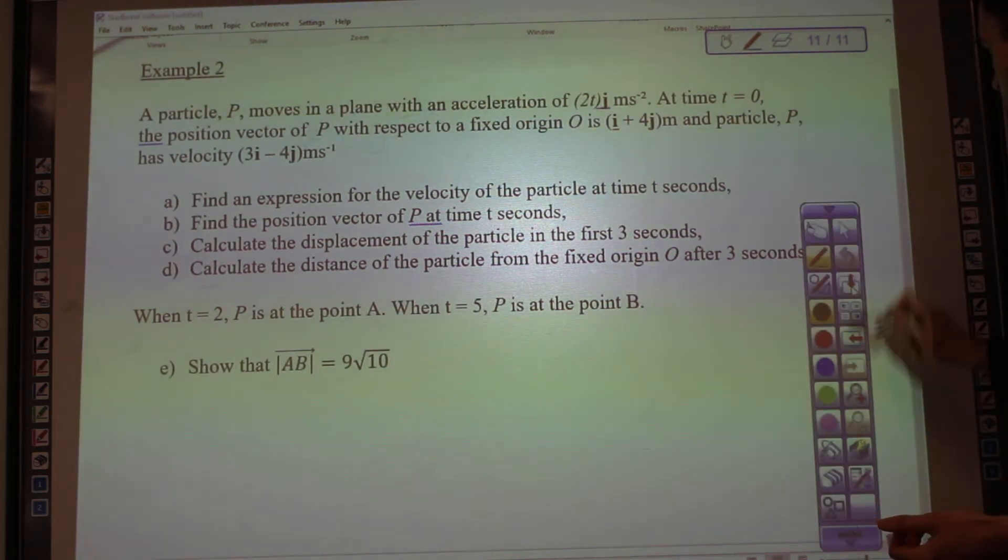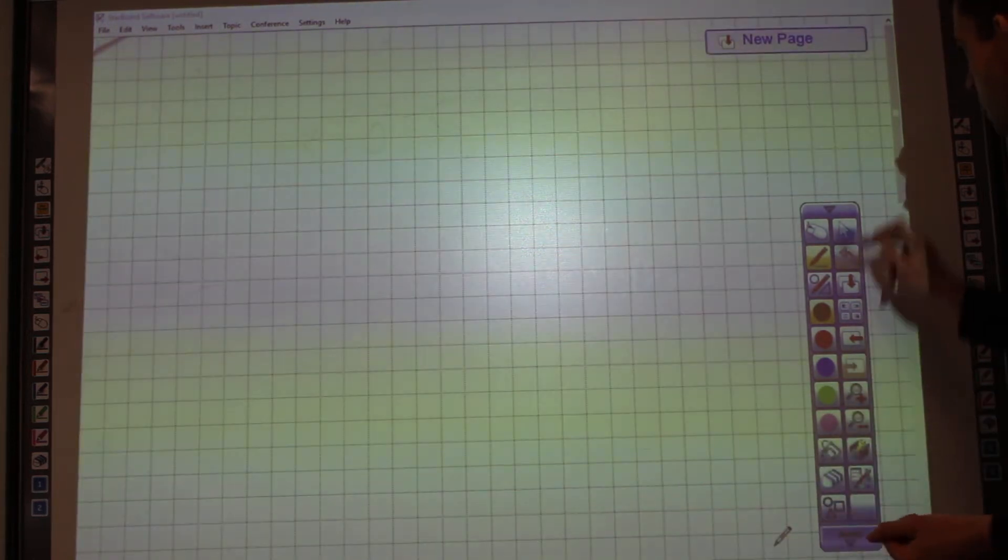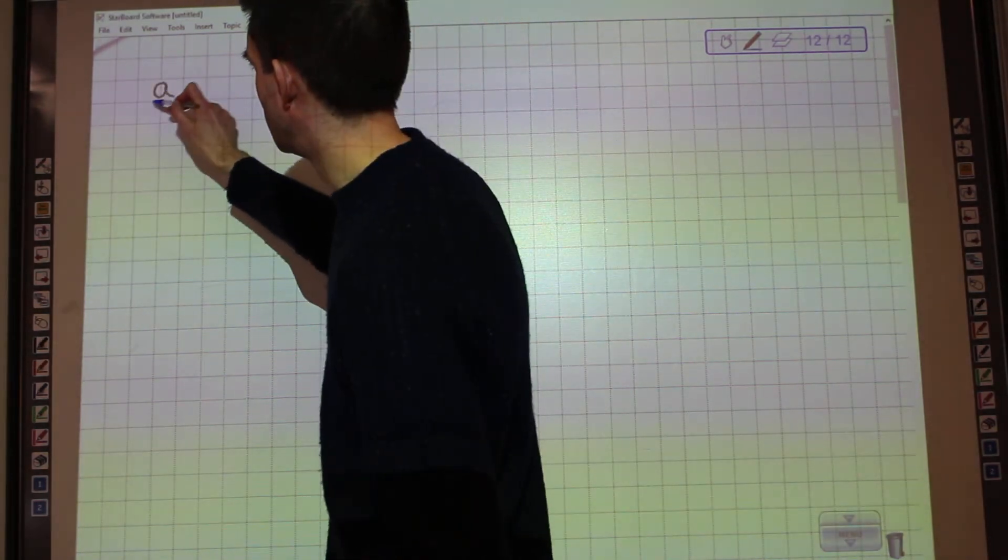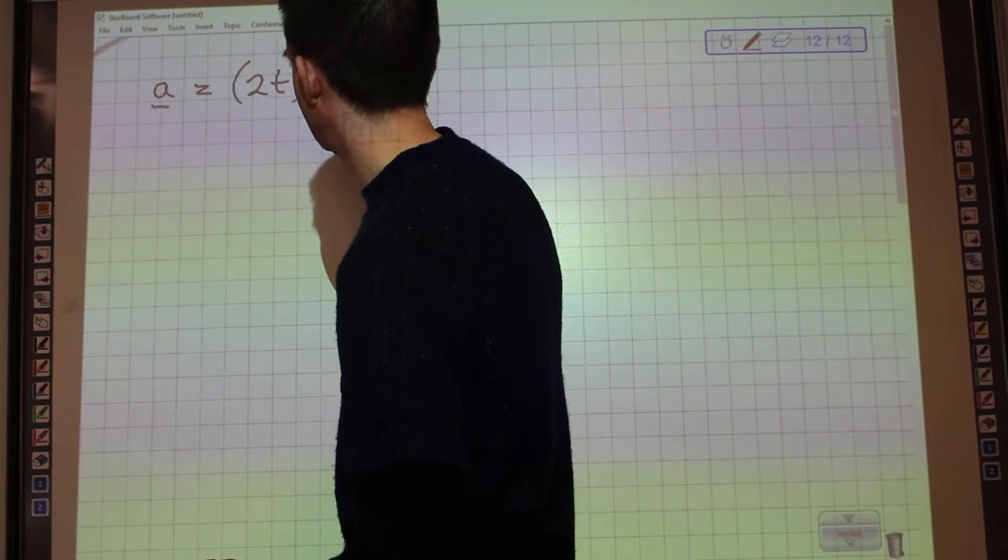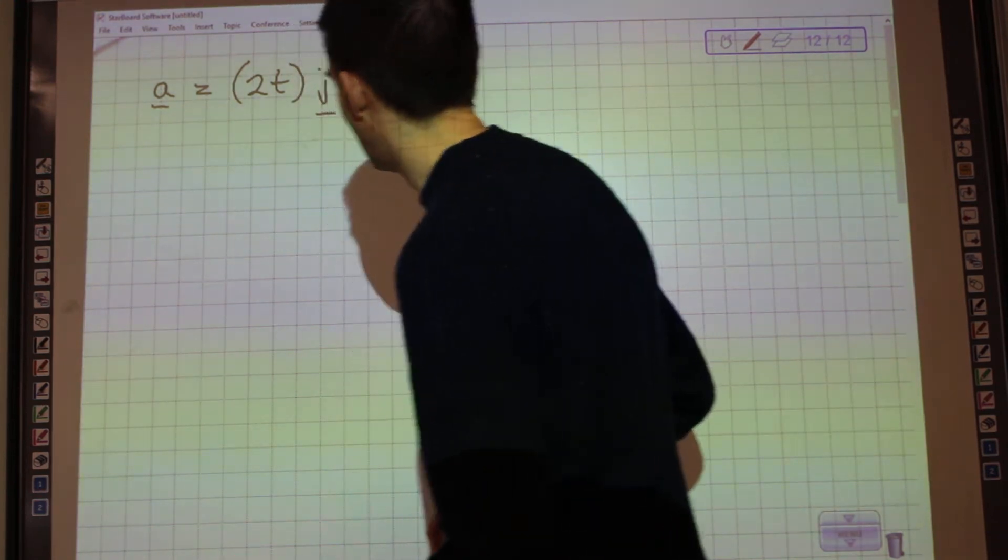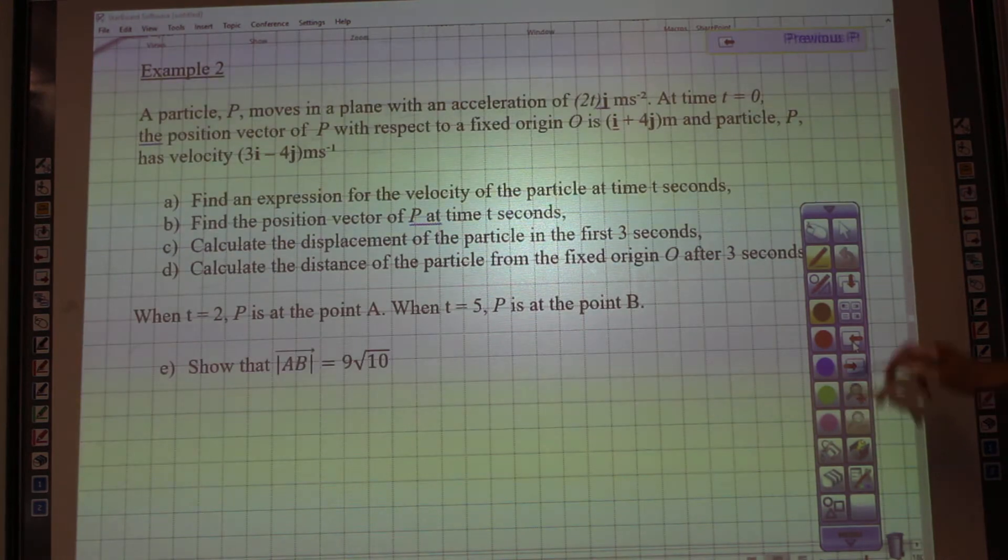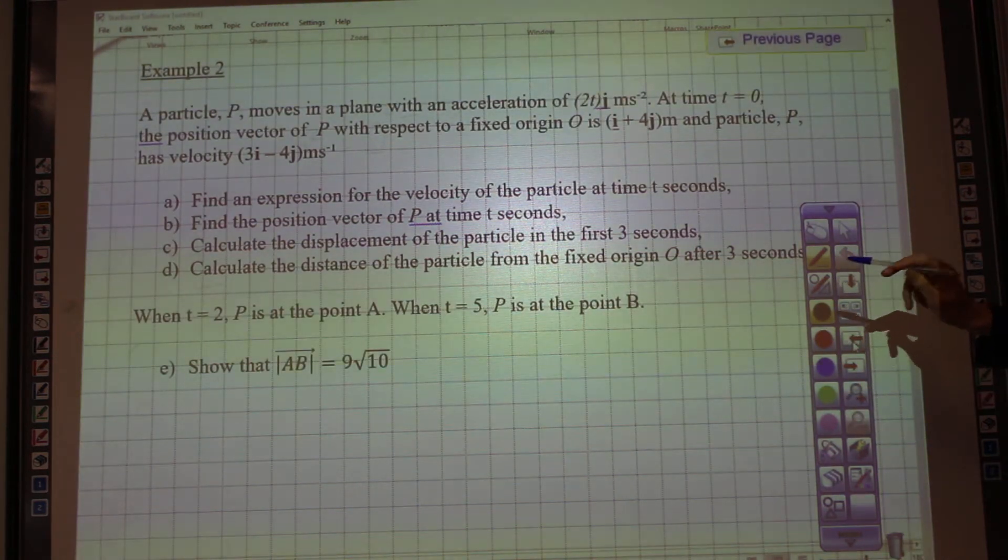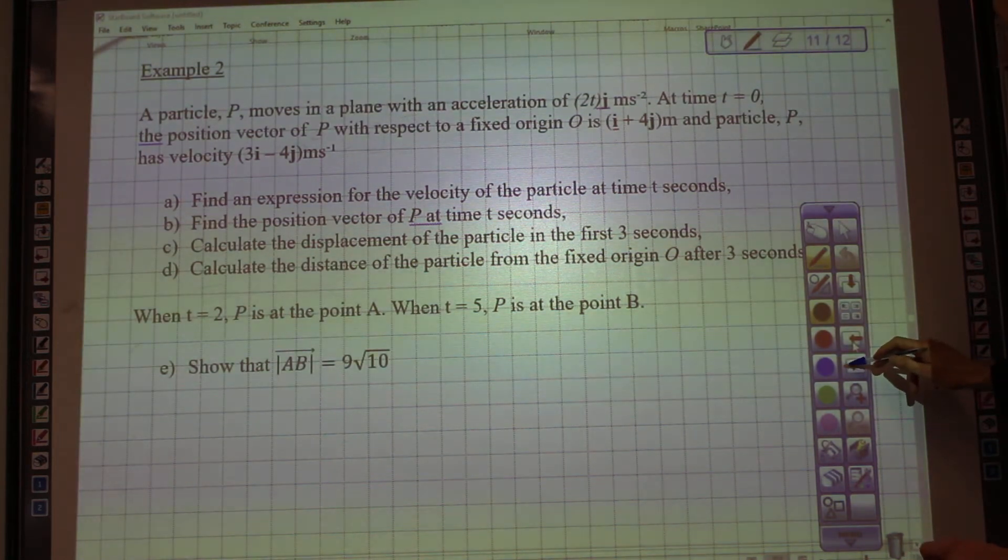I'm just going to go on to the next screen, just jot those things down because I'm going to be using them very shortly. So we were told that the acceleration was 2tj, and we were told that at time zero, the position is i plus 4j, and the velocity is 3i minus 4j.